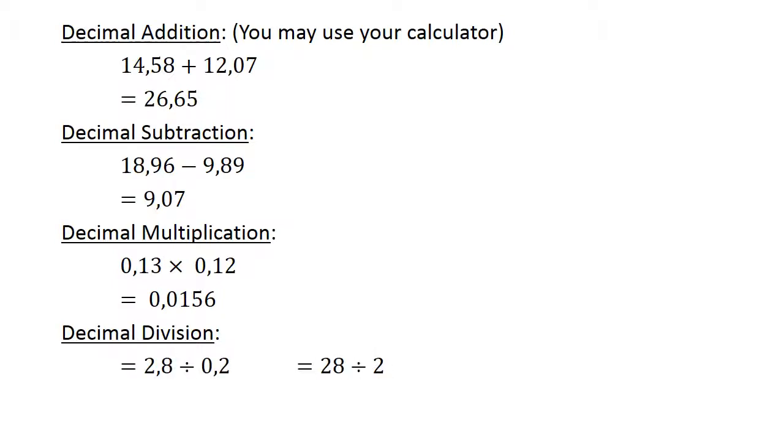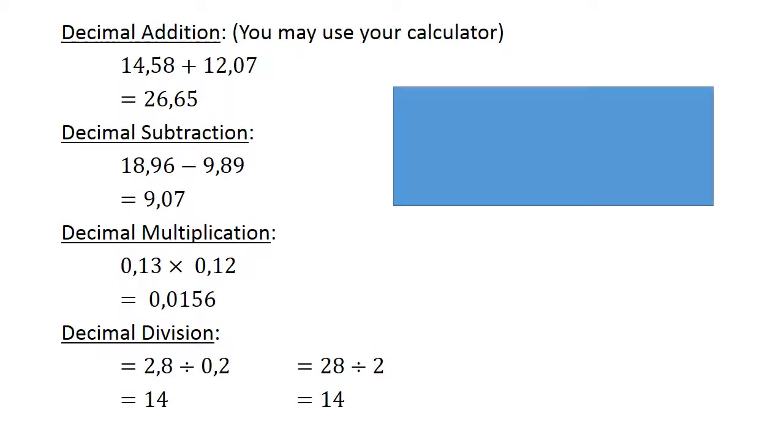Decimal division: 2.8 divided by 0.2 equals 14. Multiply both with 10 to get whole numbers: 28 divided by 2 equals 14.